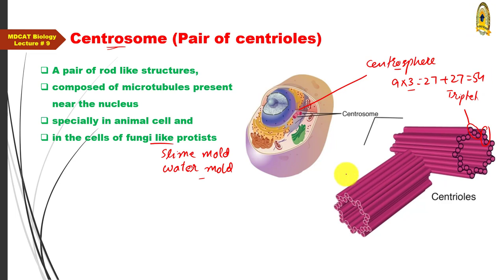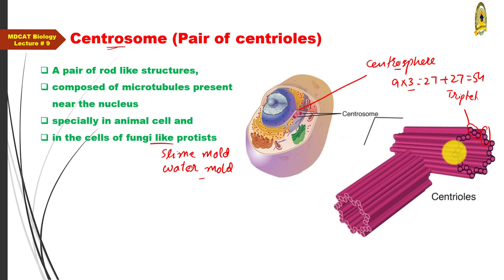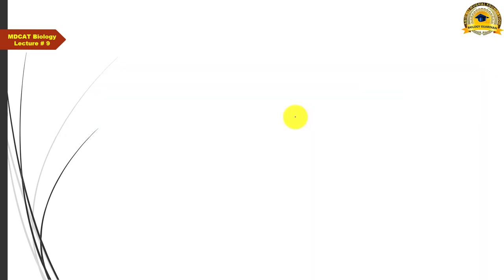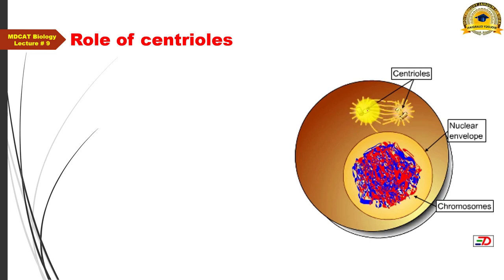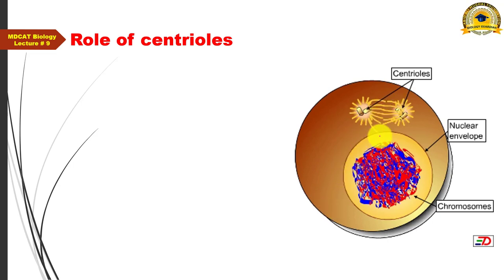In a non-dividing cell, one pair of centrioles is present. Just before cell division begins, this single pair of centrioles duplicates itself and becomes two pairs. These two pairs then migrate to opposite sides of the cell to perform their function.